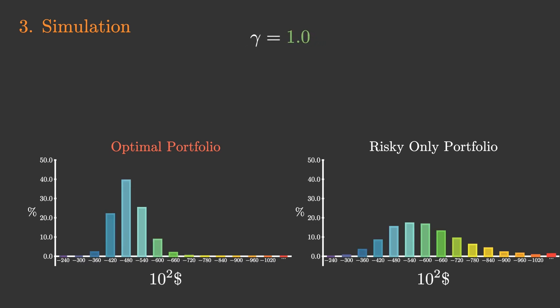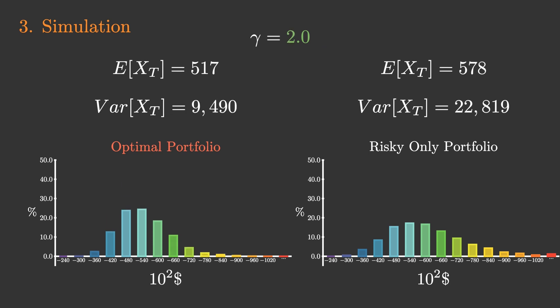Next, we sampled the final amount of reserves. The left side is the result of the optimization, and the right side is the case of continuing to hold only risky assets. When gamma equals 1, when gamma equals 2, when gamma equals 3.